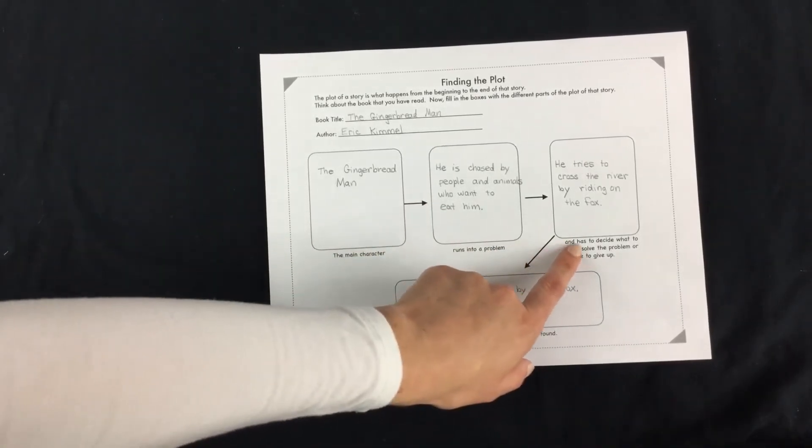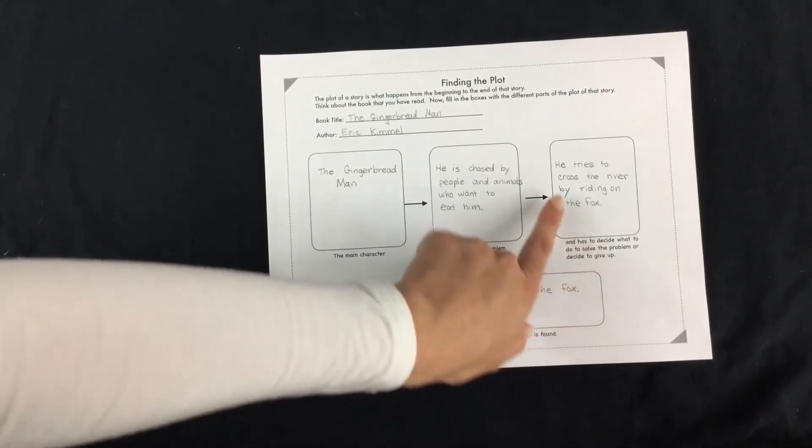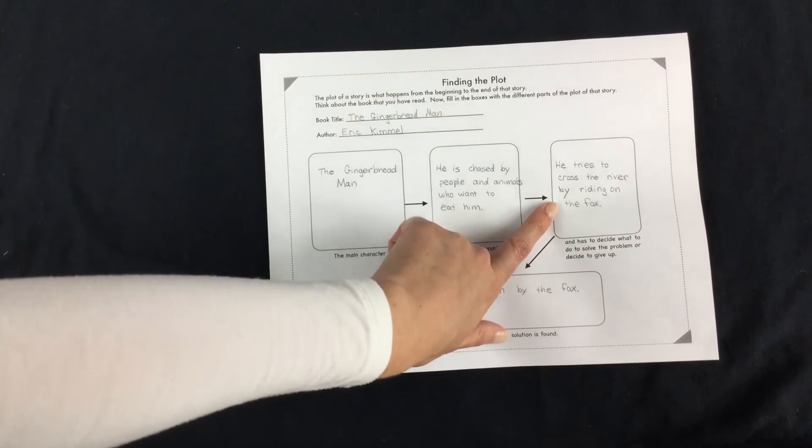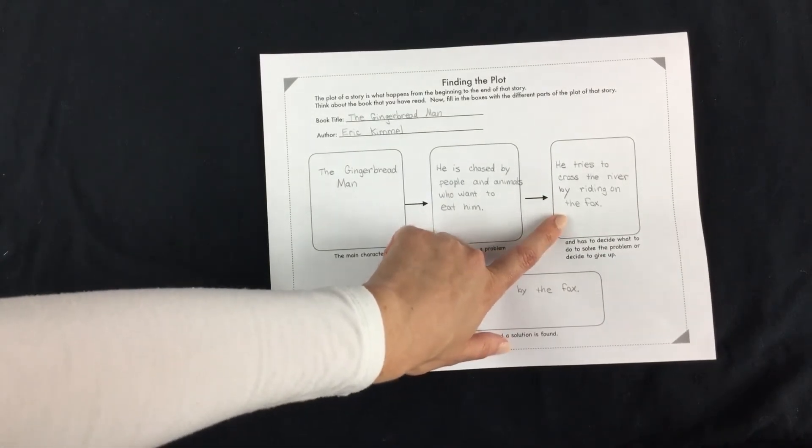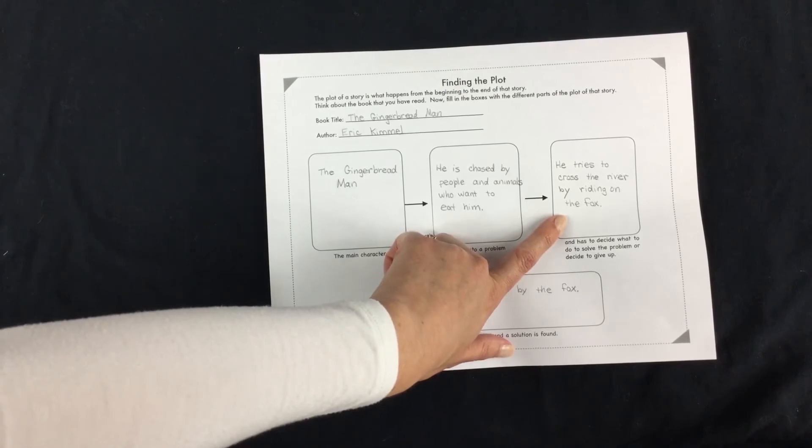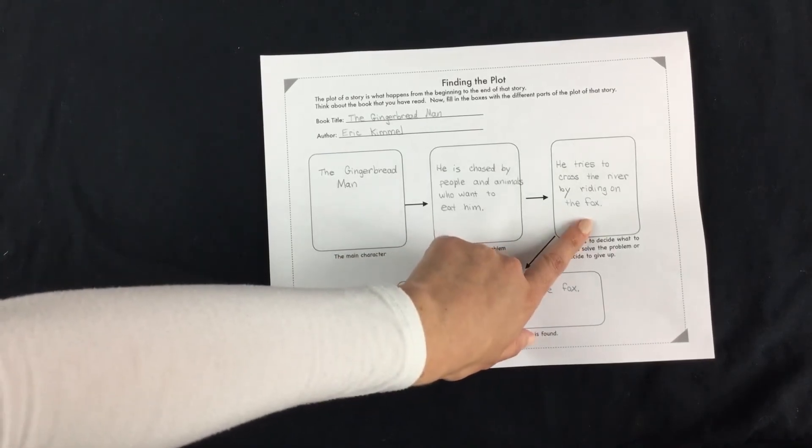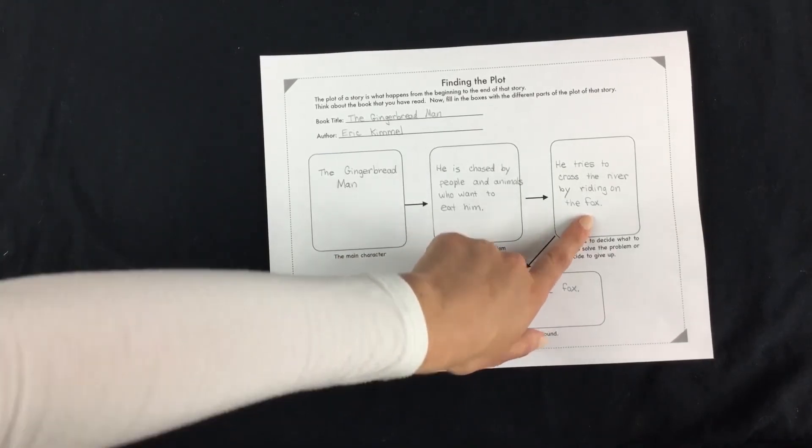Okay, so he has to decide what to do to solve the problem or decide to give up. So in this box you're going to write, what decision does this main character have to make? Because here's the problem, what decision does the character make to deal with that problem?